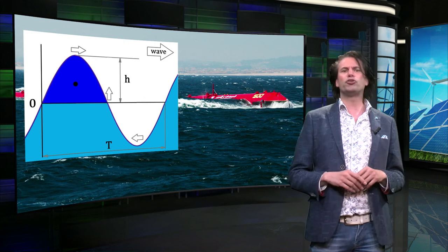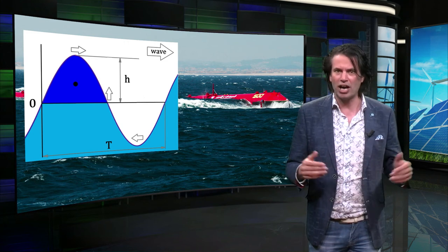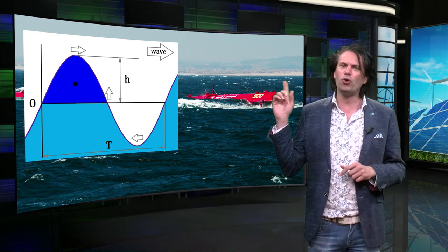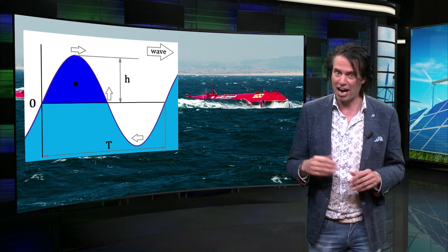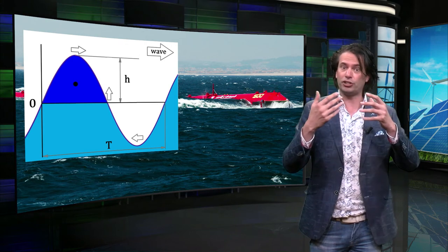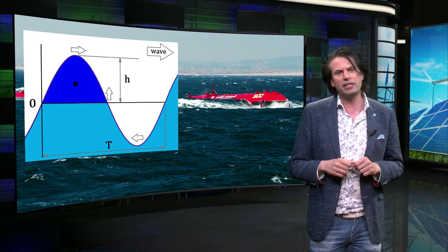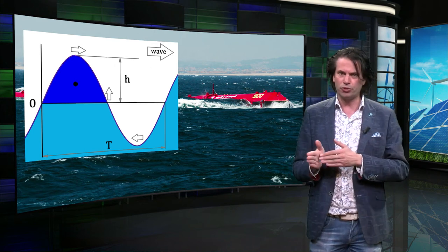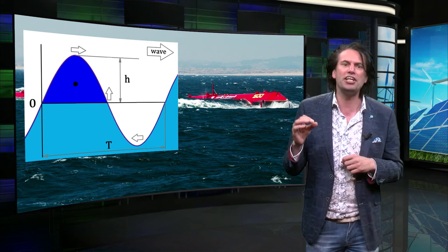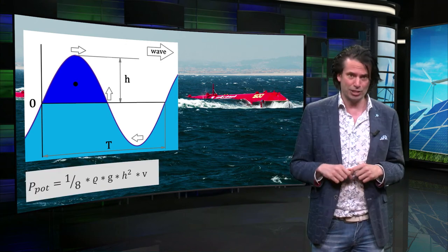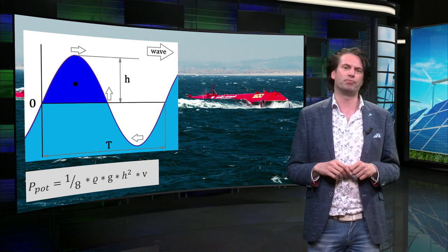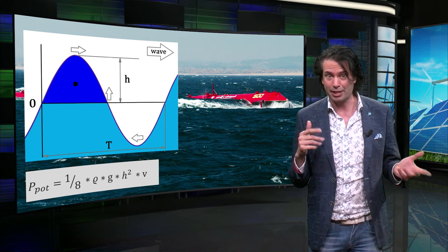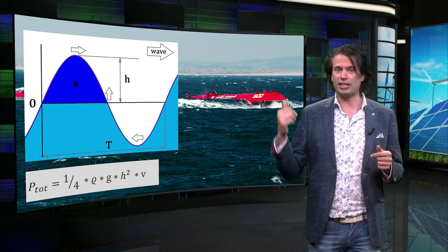In this graph you can see a representation of a wave. The wave has a horizontal speed, and the water itself also has a velocity which is different at every position. The dark blue part is above the average surface level and therefore has potential energy. This can be expressed as potential power per meter of ocean perpendicular to the direction of the wave. In this formula, only the density, height, and speed of the wave need to be known. The formula of the kinetic energy is, surprisingly, exactly the same, making the total energy twice as high.